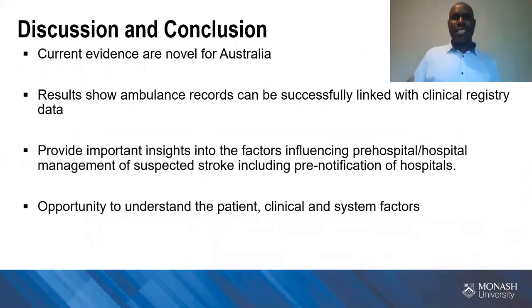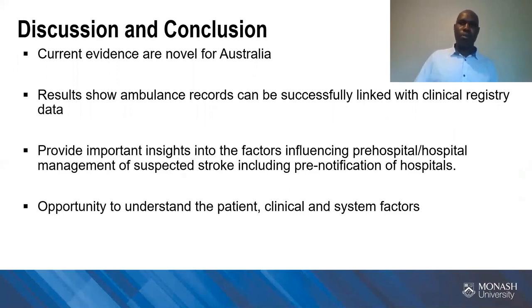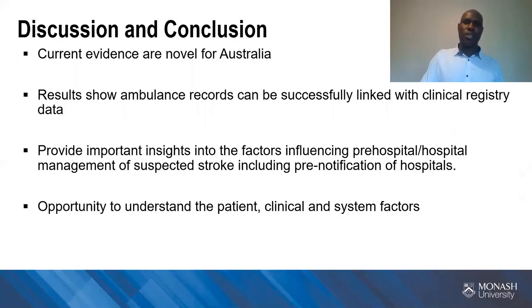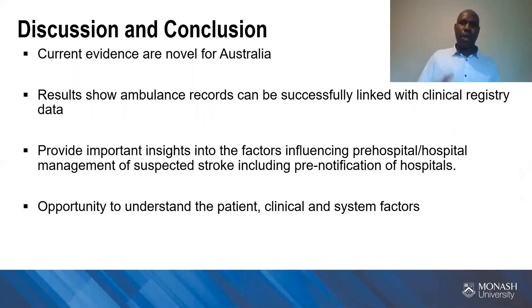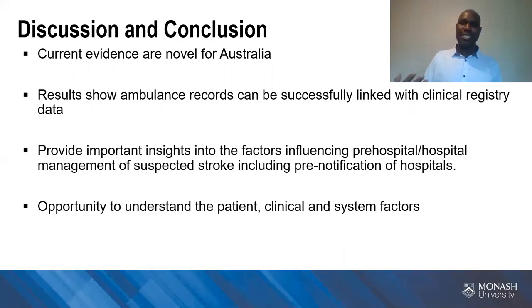For both paramedics and call dispatchers, fewer women were identified as having a stroke, which was similar to those patients who had stroke onset beyond four and a half hours. Those with less severe strokes were more commonly identified than those with more severe stroke. These findings provide important information that ambulance records can be successfully linked to clinical registry data. In the pre-hospital environment, there are multiple stages that can be targeted to improve stroke care, and this data provides an opportunity to understand the patient, clinical, and system factors associated with care management.